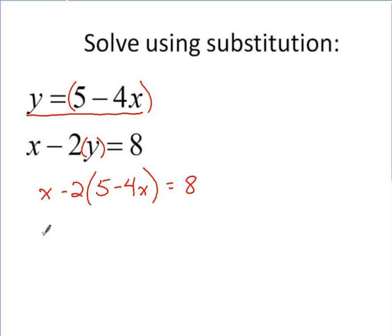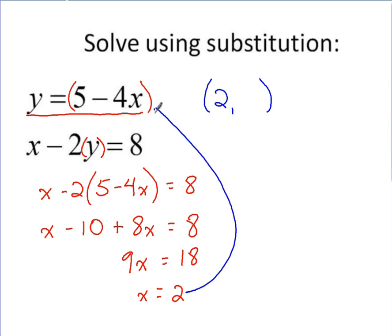If I distribute the negative 2 through, I get x minus 10, plus 8x, equals 8. Combine like terms get 9x, and add 10 over, get 18, so x is going to be 2. That one worked out a lot nicer. Setting up my solution, which is an ordered pair, x coordinate is 2. To find the y coordinate, we simply go back to the beginning. Go back to the point where we solve for our first variable, that variable being y. We plug in what we found for x to this expression that y equals, you've got 5 minus 4 times 2. So 5 minus 8, the point's going to be (2, -3).